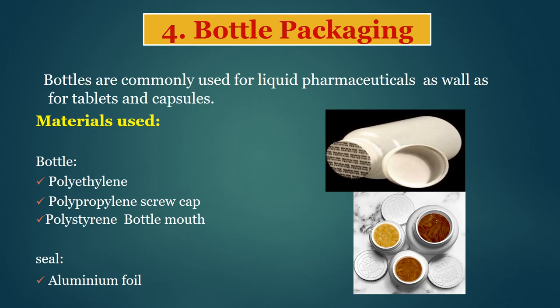Now here you can see, it is very common and aap jaante bhi hain, isko hum bottle packaging kehte hain. Aur bottle packaging mein jo material use karte hain: bottle ka polyethylene, polypropylene screw cap, polystyrene bottle mouth. Toh mouth aur screw ka alag-alag material ka use karte hain. Seal ke liye hum aluminium foil ka use kar sakte hain — yeh sealing aluminium foil ki iske upper part ko close karne ke liye karte hain. So these are bottle packaging.